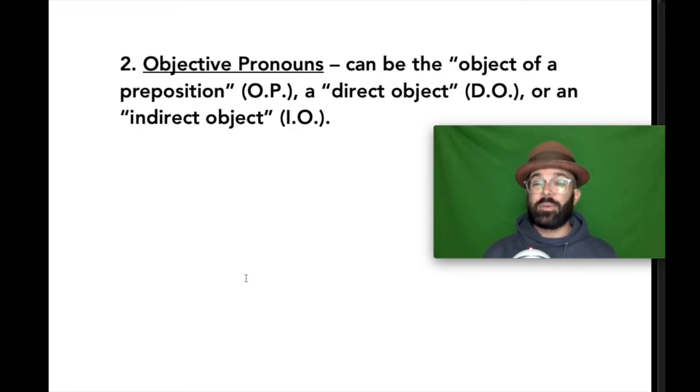or an indirect object, the thing that receives the direct object. If you're going to substitute a noun in any of these different parts of a sentence, then it has to be from the objective pronoun list. Let's take a look at some of these examples.